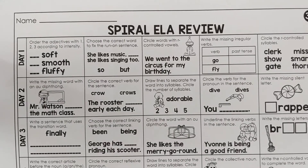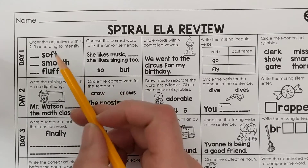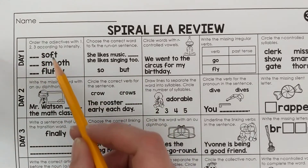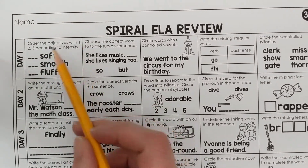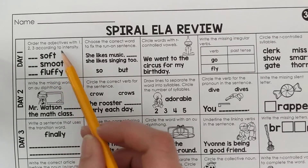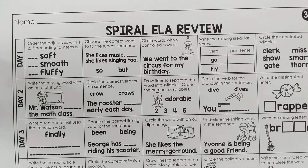It's time to correct our Spiral ELA review — sorry about that. We're doing Day One for Monday, March 30th. The first thing we need to do is order the adjectives with one, two, and three according to intensity.